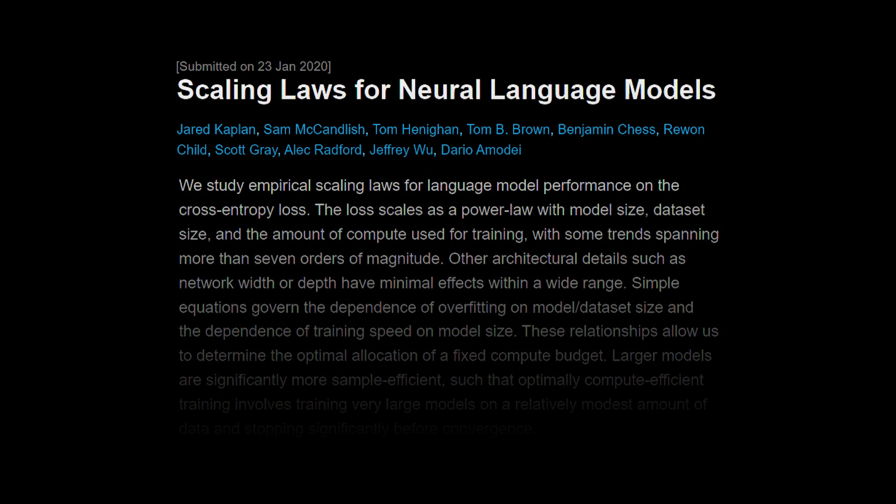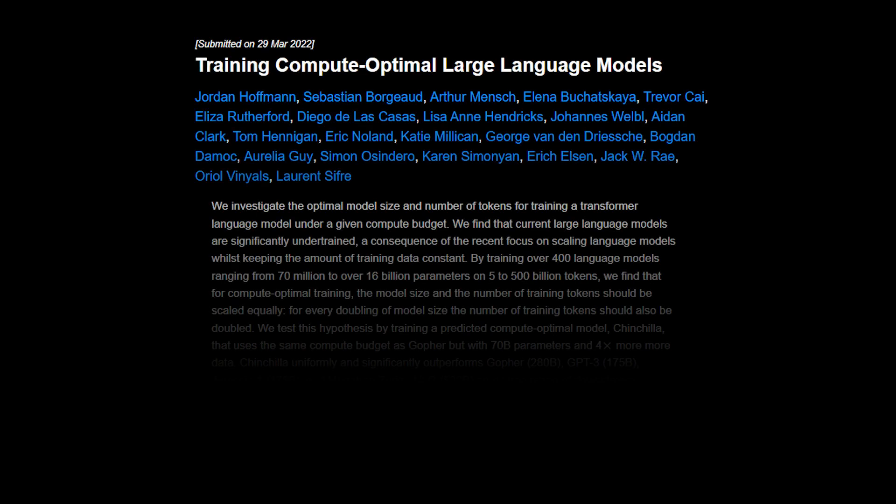It was interesting — the original scaling laws paper by OpenAI was slightly wrong because of some issues they had with learning rate schedules. Chinchilla showed a more correct version, and from then people have again kind of deviated from doing the compute-optimal thing.